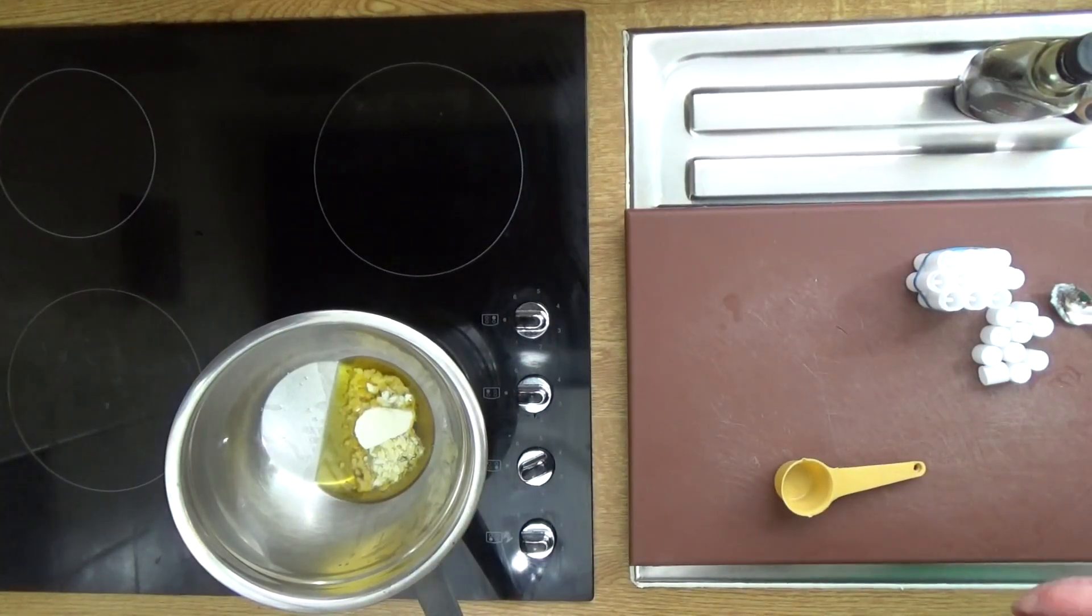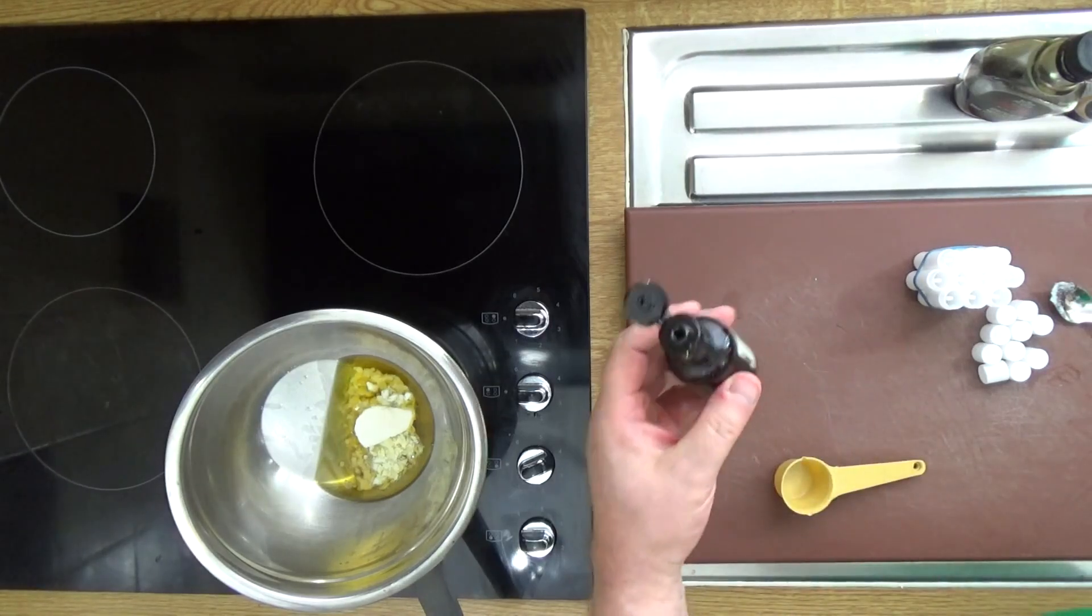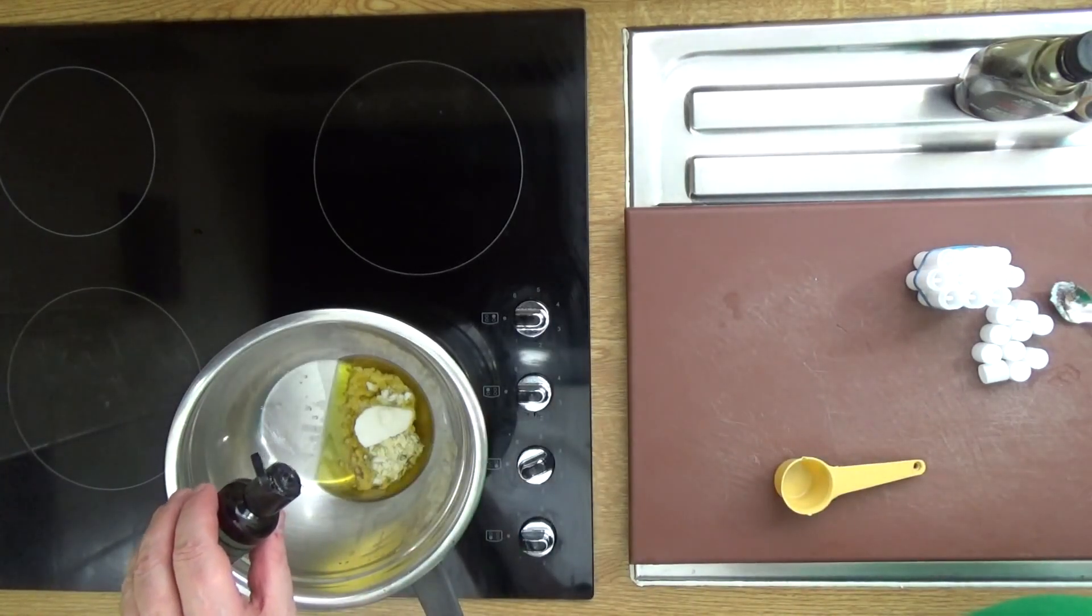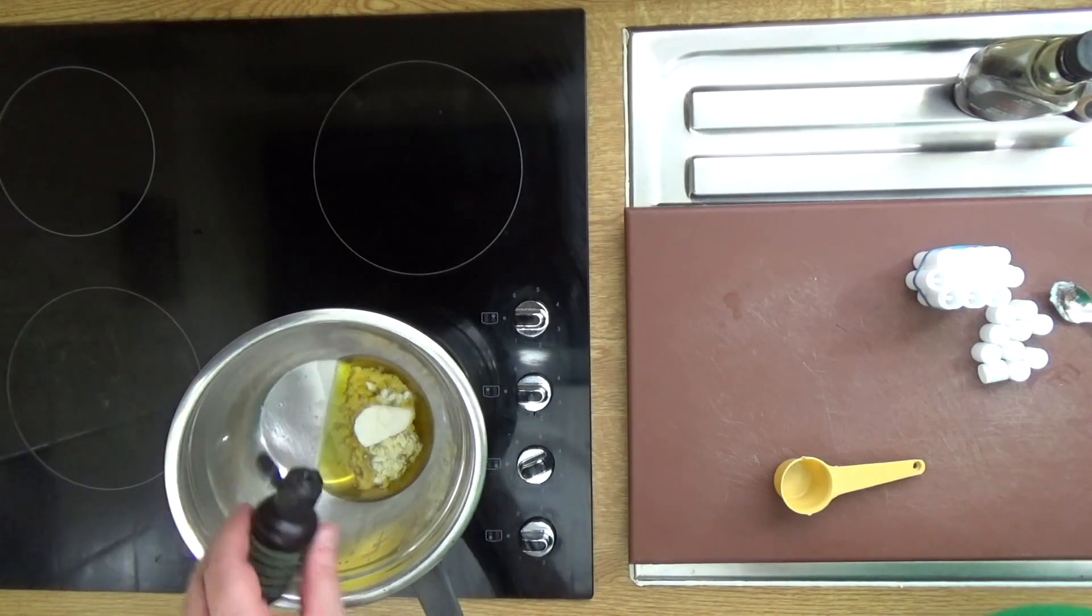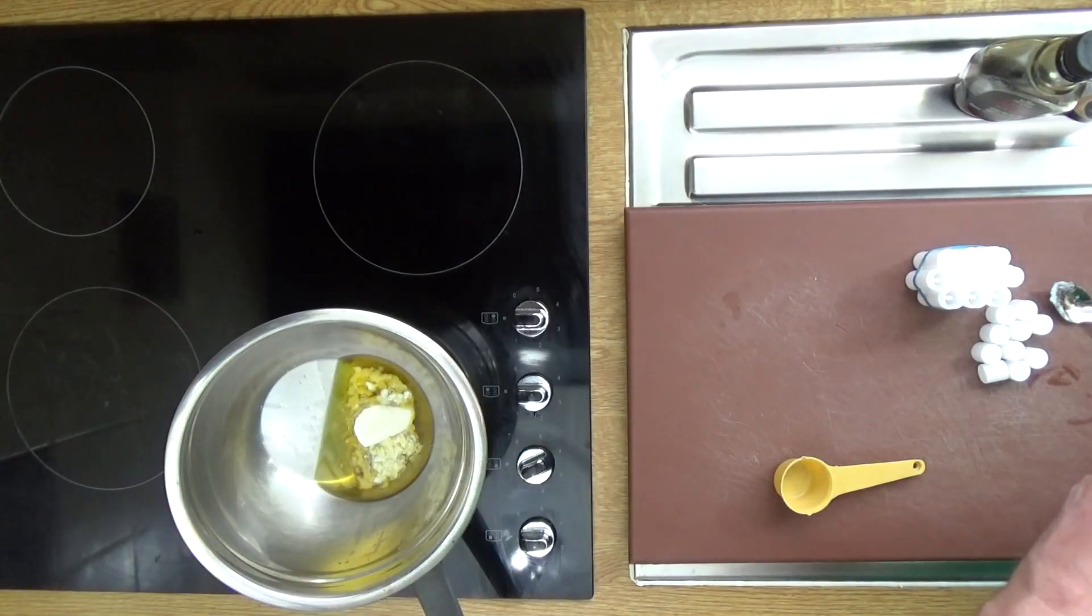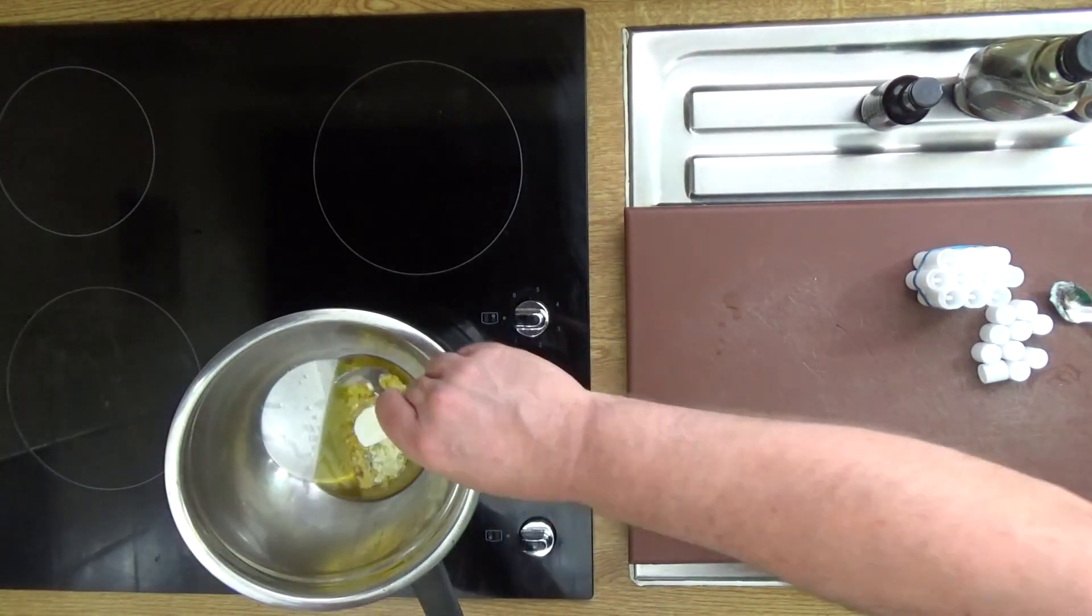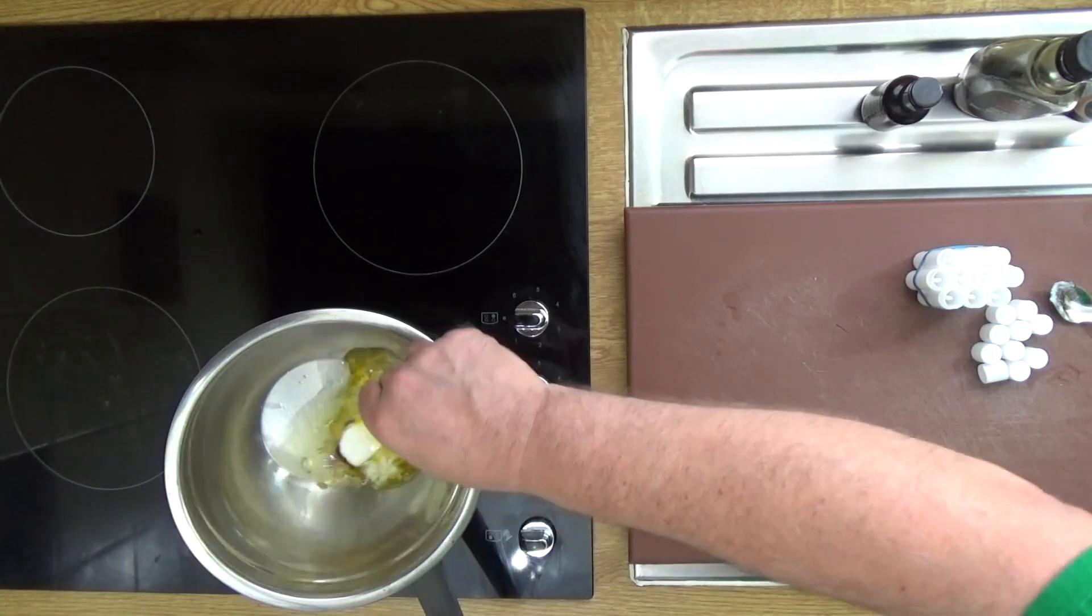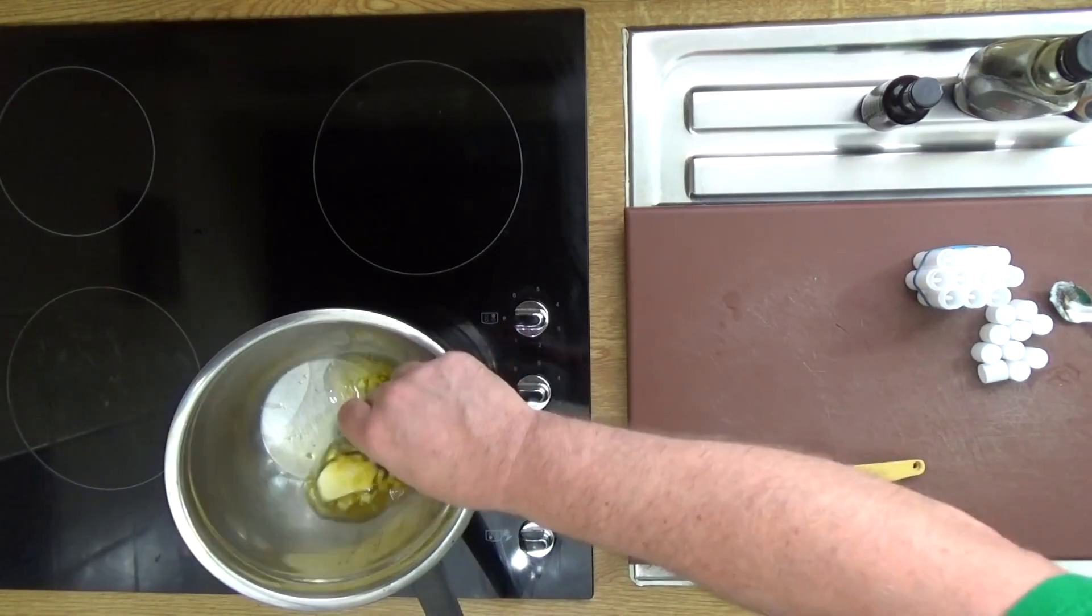The last thing I want to put in is five drops of vitamin E oil. The vitamin E oil acts as a preservative. A bit more, there you go, I'll do. And then all we need to do now is bring that lot up to melting point and then mix it thoroughly.